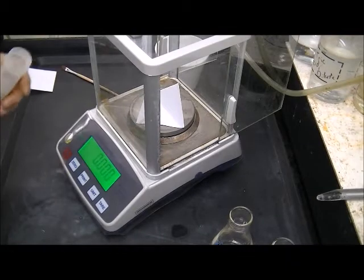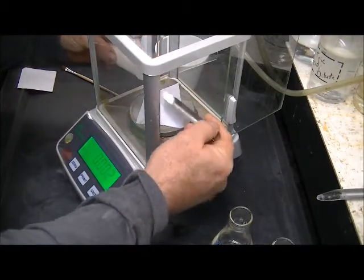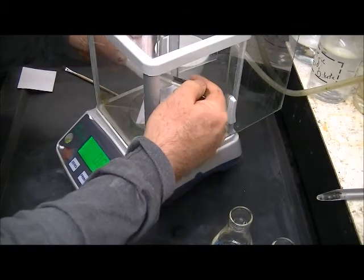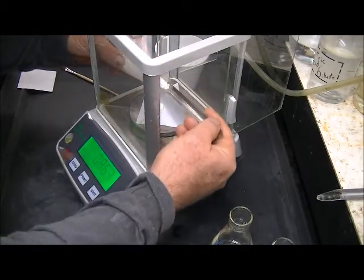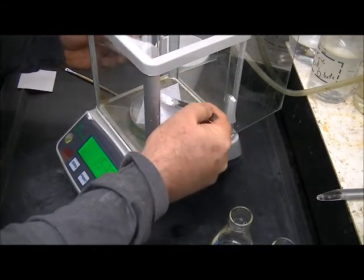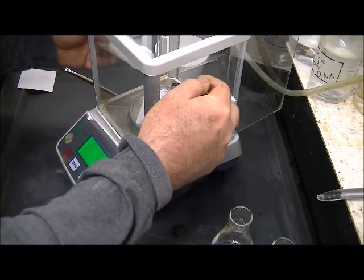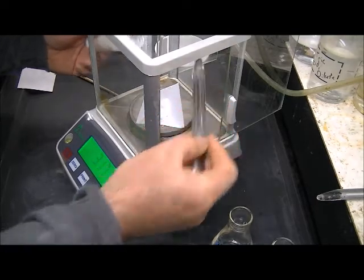This is going to be sample A. And the weighing of the samples is very similar to what we did before. Except that because these are diluted somewhat with an inert powder, we need to weigh more of it. So we're shooting for somewhere close to three grams.